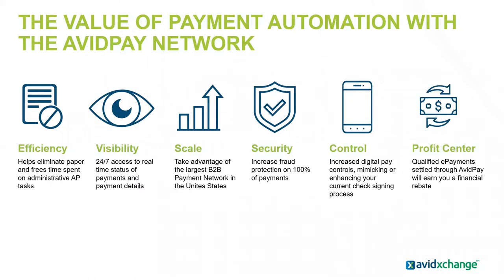We're also paying rebates on any payment that we convert to an electronic payment. Right now we're averaging about a 40% adoption of the payments that run through our network going electronic, and you're getting paid a rebate on those, which can actually turn your accounts payable payment process into a profit center. Additionally, you'll save money on not having to mail out a 50-cent postage stamp, 20-cent pre-printed check stock, and a 7-cent envelope — that's about 75 cents for every check you mail out the door that you can save by running it through our automated payment network.